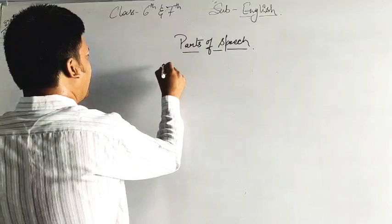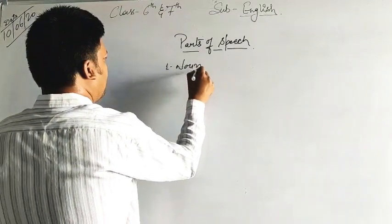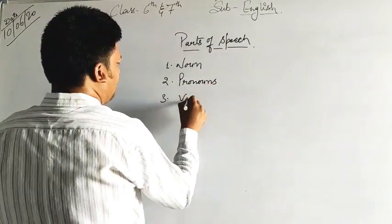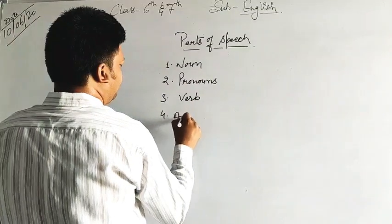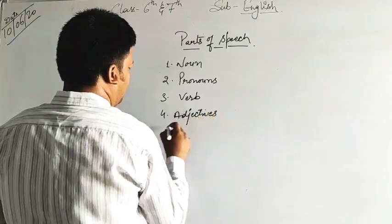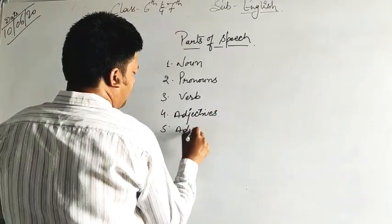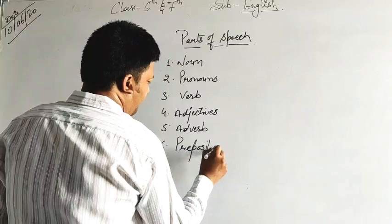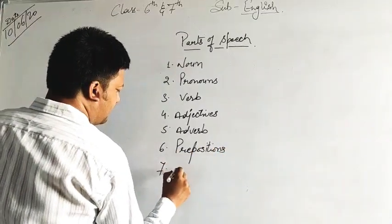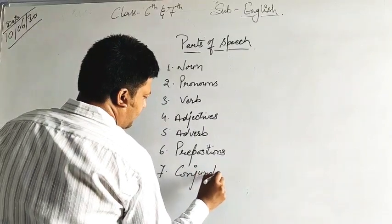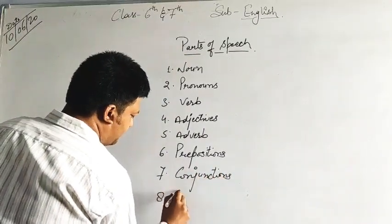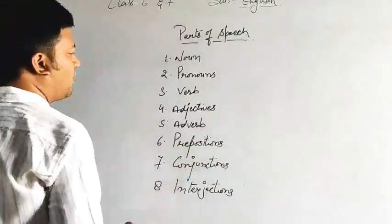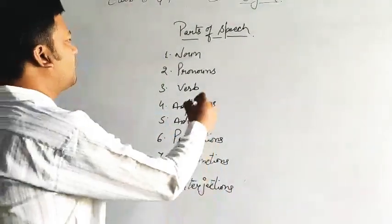Very important. There are total eight parts. The first one is noun, second one is pronouns, third one is verb, then comes adjectives, fifth one is adverb, sixth one is prepositions, the seventh one is conjunctions, and the eighth one is interjections. We will cover it all. It is in your syllabus. Nouns we have already covered.